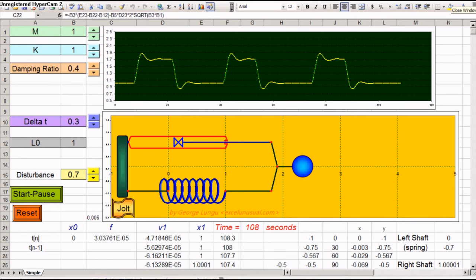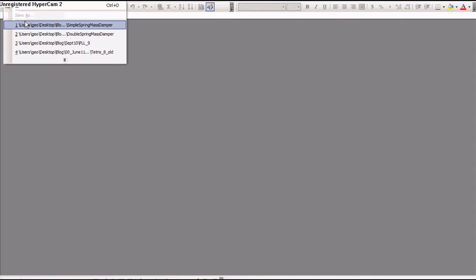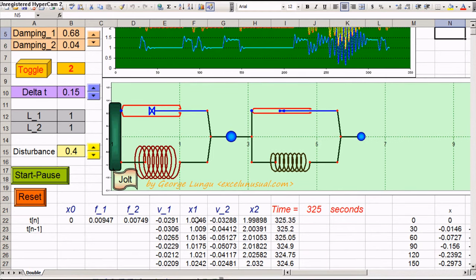Let's stop this and bring up a new model, which is a double spring mass damper system. This one is similar, it has a little bit more formulas. It has two forces, two speeds, and two coordinates.